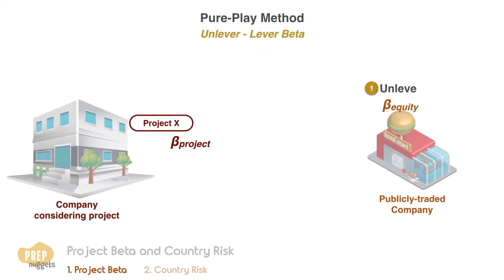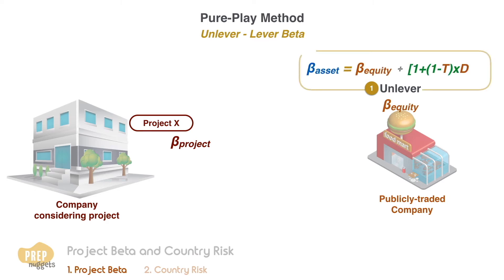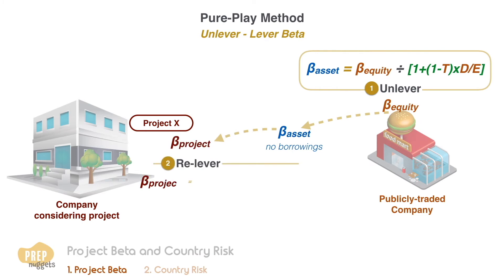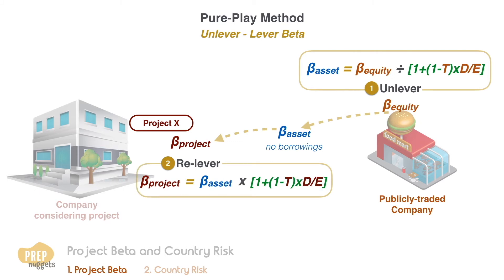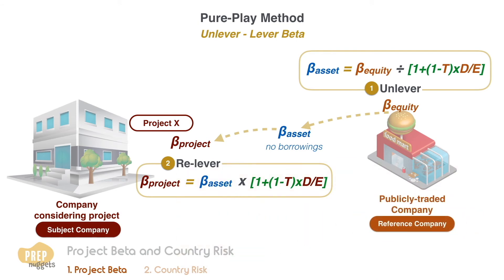To do that, we first need to unlever the beta of the equity of the public listed company using this formula. What we get is the beta of the asset without any borrowing. Once we have this, the next step is to relever based on the capital structure of the company evaluating the project using this formula. Let's call this the subject company and this the reference company from this point on. At first glance this may look complicated, however, once you see the pattern, it's actually quite simple.